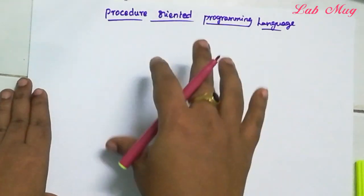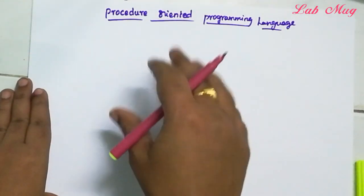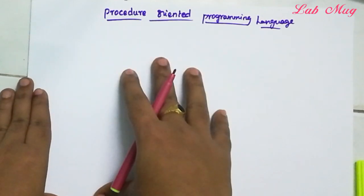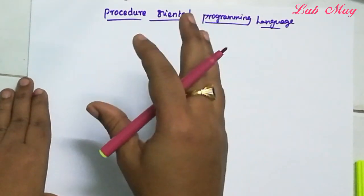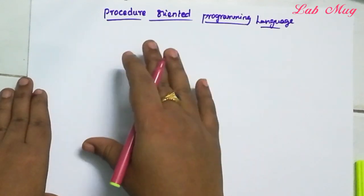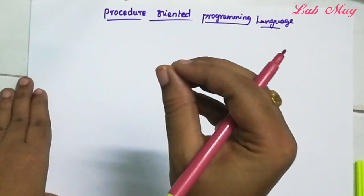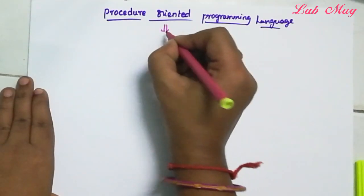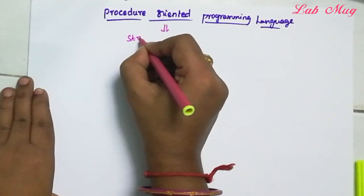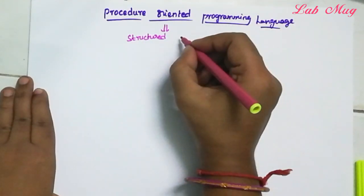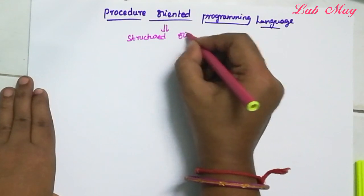So in procedure oriented programming language, every programming language is nothing but variables and functions. So procedure oriented language is another name: structured oriented language or structured programming language.